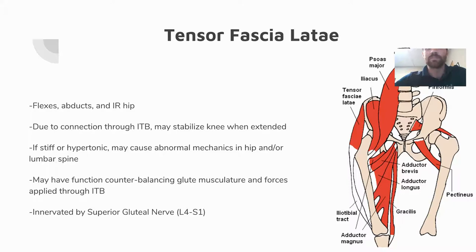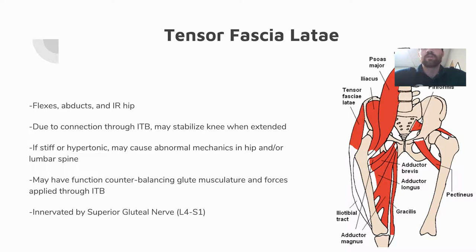If the TFL is stiff or hypertonic, it may cause abnormal hip or lumbar mechanics. For example, if TFL is dominant during hip flexion, the hip may internally rotate each time the leg is lifted — repetitively this causes significant hip pain. The tensor fasciae latae is innervated by the superior gluteal nerve, L4 through S1 — keep that in mind as a couple of other muscles share that same nerve.